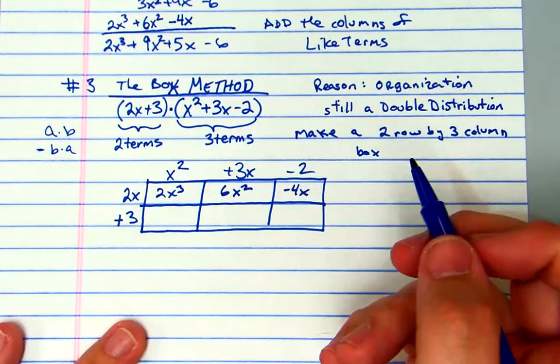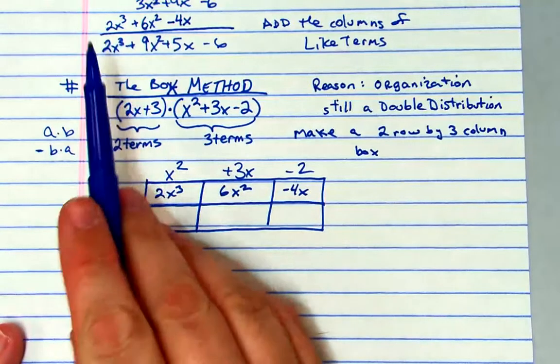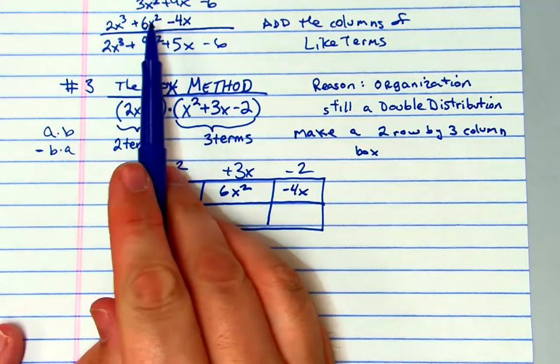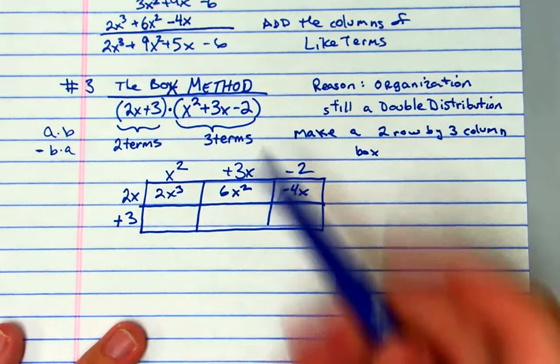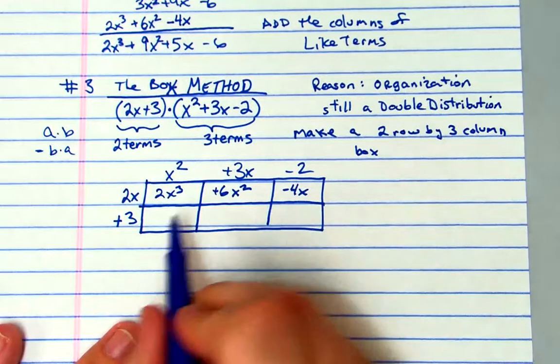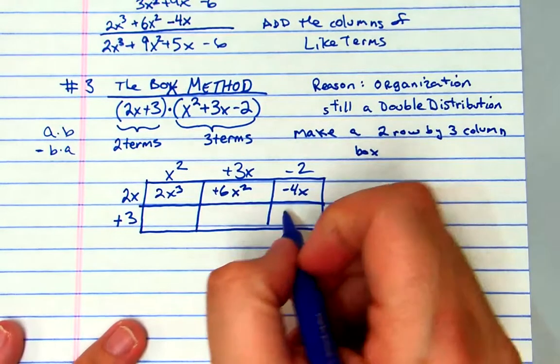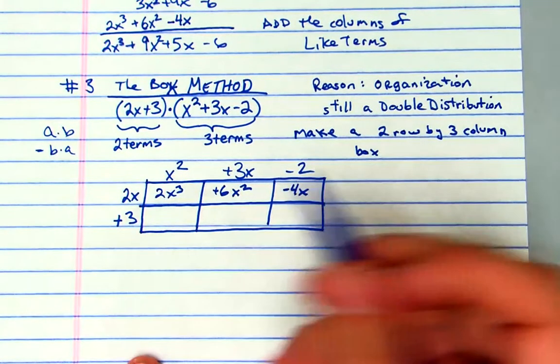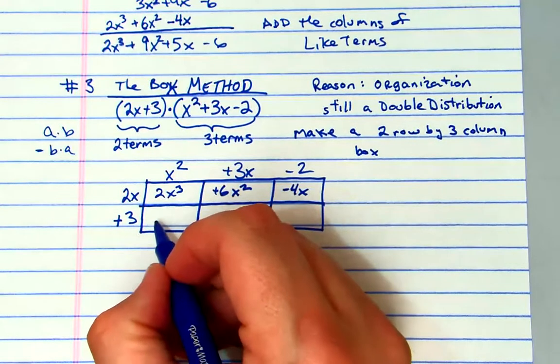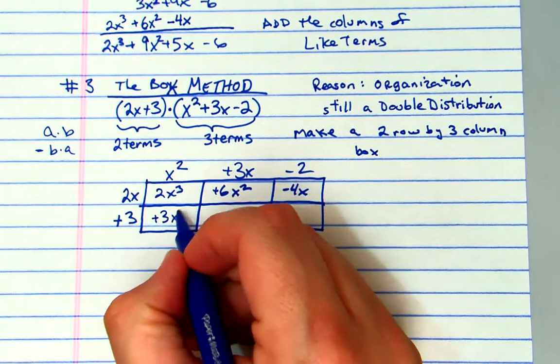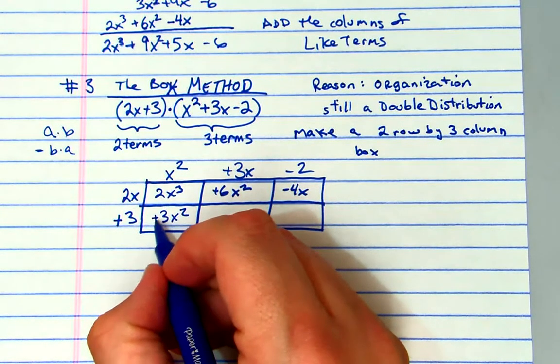Now 2x times negative 2, that's negative 4x. So we did the distributive property, which you can see it here: 2x cubed plus 6x minus 4x. So we got that distribution property down.